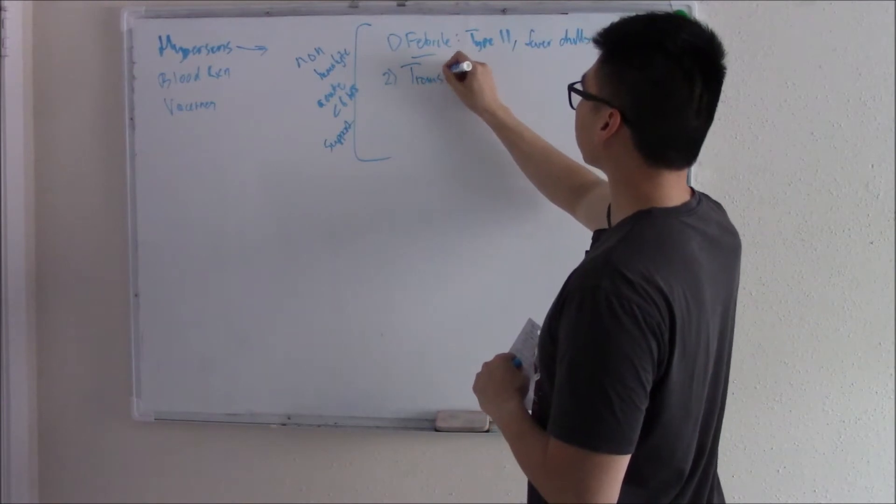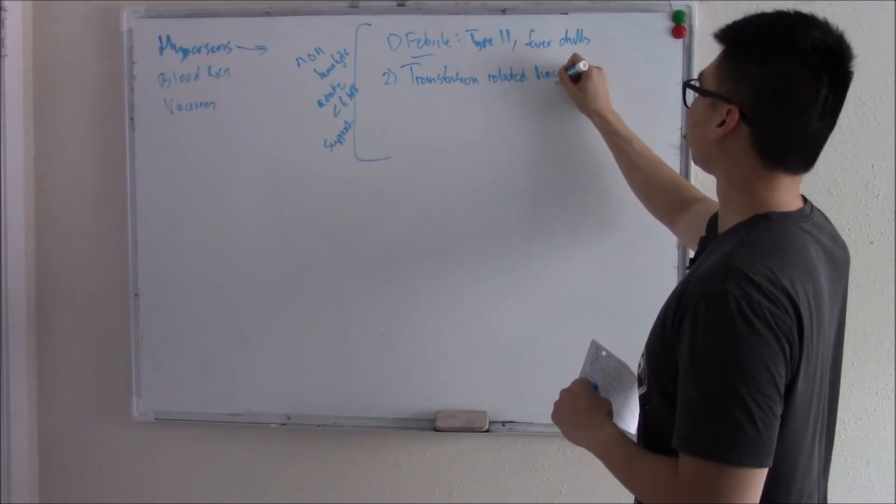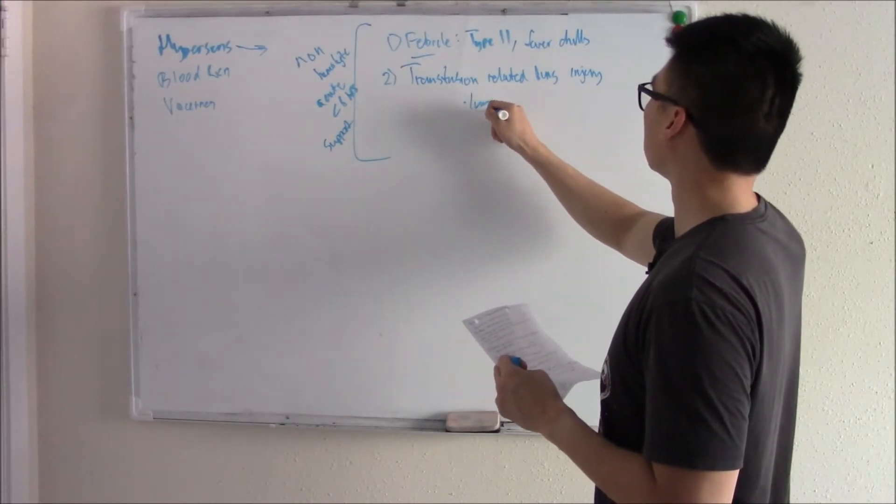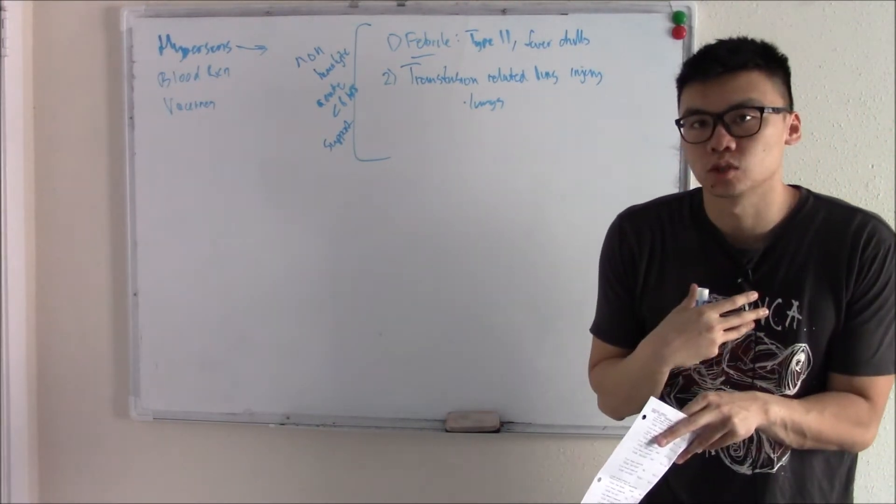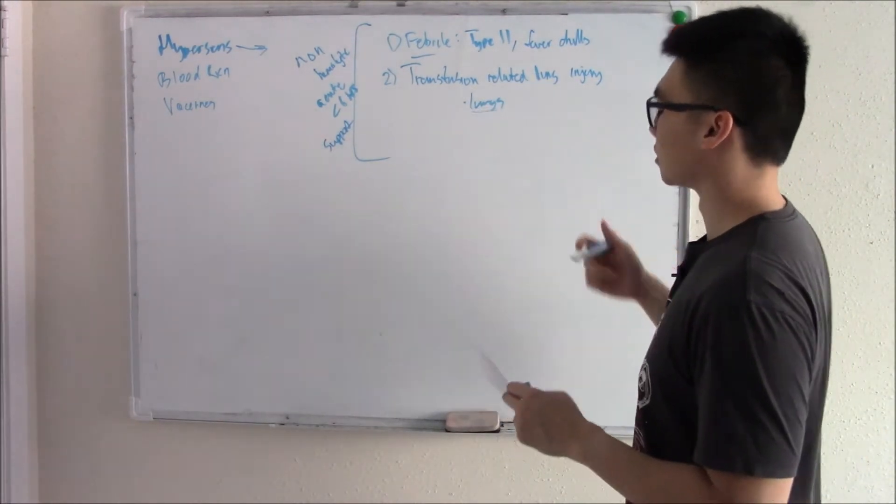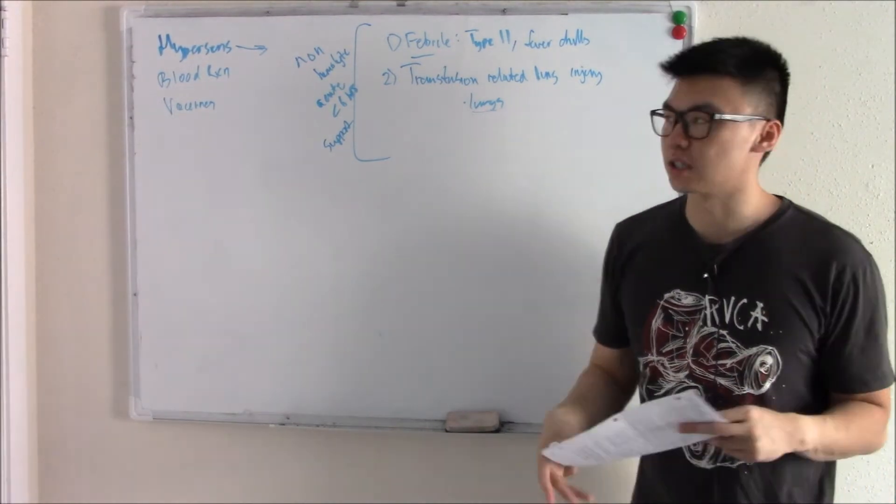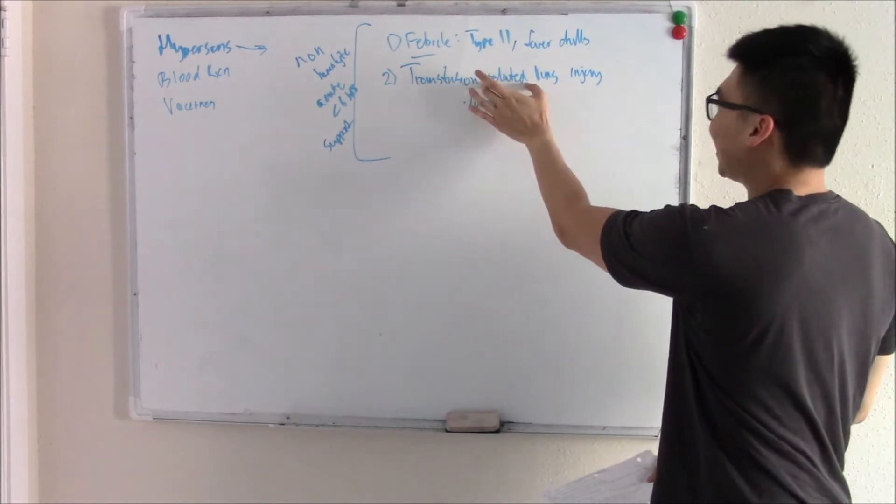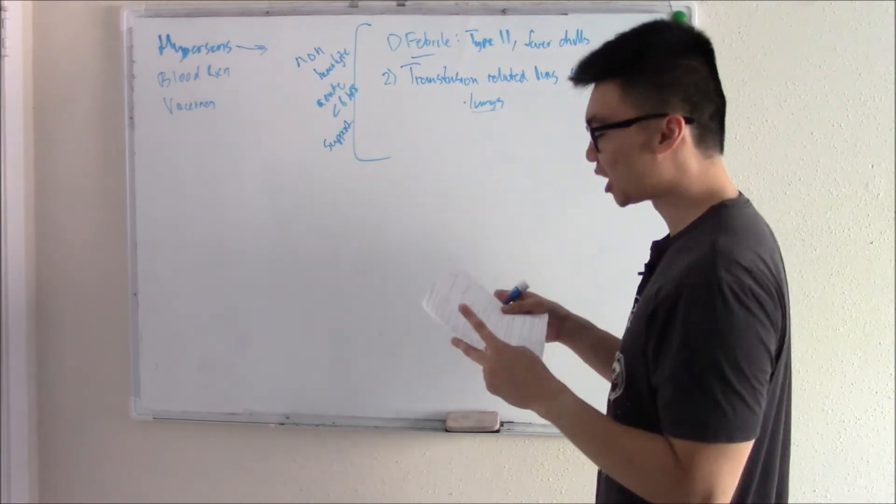You have transfusion related lung injury. It's a reaction that involves your lungs. So you'll have the fevers, you'll have the chills, but you also have respiratory distress, shortness of breath. You do chest x-ray, there's a whiteout. So it involves the lungs. If you see a patient that has been given blood, has respiratory distress, fevers, chills, and you look at the answer choices and one of them is transfusion related lung injury, it's probably that one.